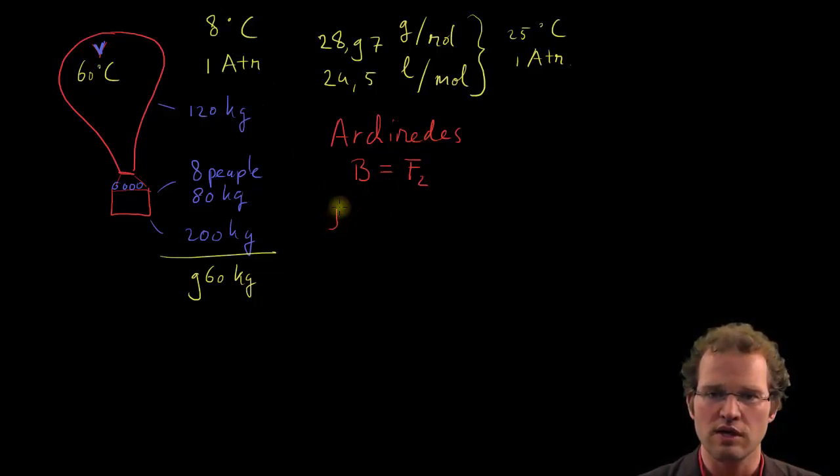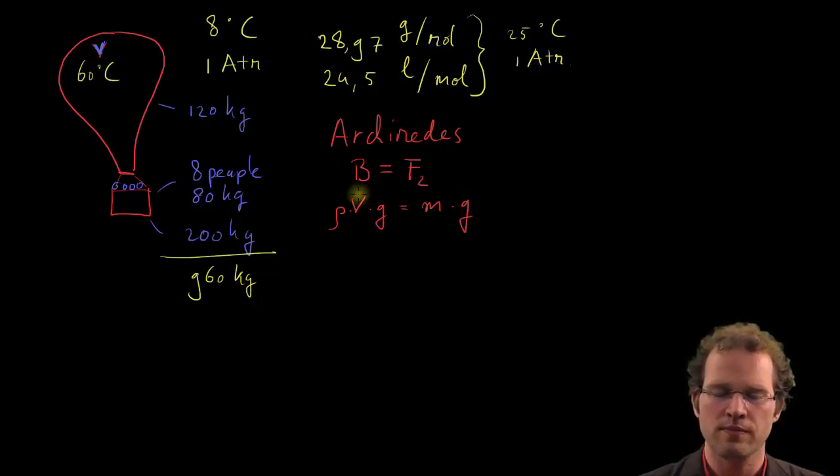Archimedes said, if you take the mass, so density times volume times acceleration on earth, we have the mass times g from the people, the bucket and the balloon, plus the mass of the air that's still in the balloon, and that's the air from 60 degrees centigrade, and this was the 8 degrees centigrade.